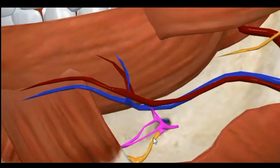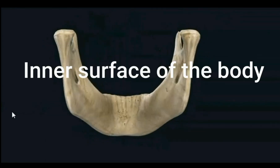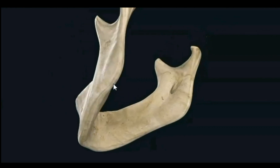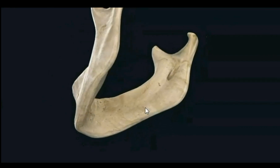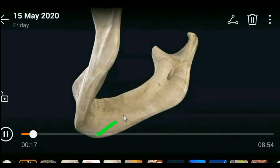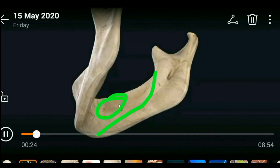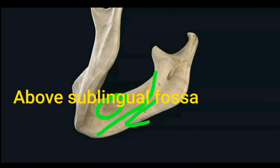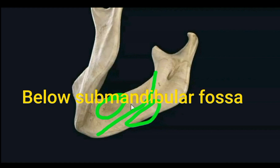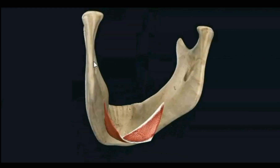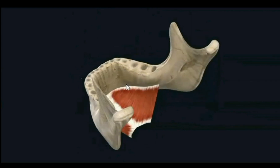The mandibular canal is present in the ramus. On the inner surface of the body, just like the outer surface, there is an oblique line called the mylohyoid line, running from the anterior part of the lower border to the posterior part of the upper border. The mylohyoid muscle takes origin from this line. Above the mylohyoid line is the sublingual fossa; below is the submandibular fossa, for the lodgement of the respective glands.